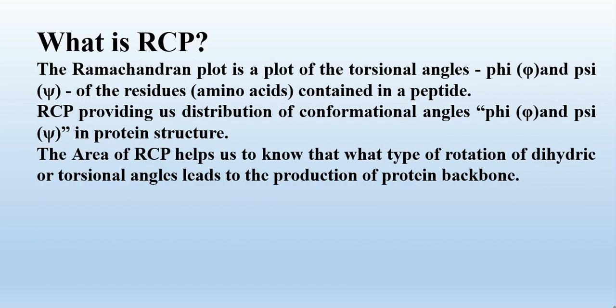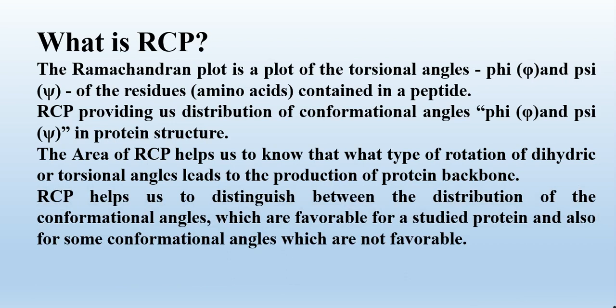The area of the Ramachandran plot helps us to know what type of rotation of dihedral or torsional angles leads to the production of the protein backbone, like alpha helix or beta sheet. It also helps us to distinguish between the conformational angles which are favorable for the studied protein and those which are not favorable.